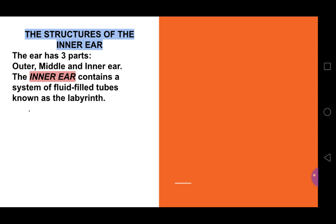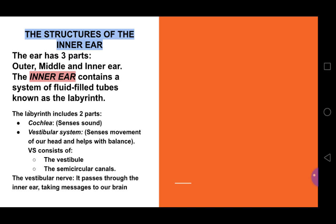The structure of the inner ear: the ear has three parts — outer, middle, and inner. The inner ear contains a system of fluid-filled tubes known as the labyrinth. The labyrinth includes two parts: one is the cochlea, which senses sound and is responsible for hearing, and the vestibular system, which senses movement of our head and helps with balance. It consists of the vestibule and the semicircular canals. There is a vestibular nerve which passes through the inner ear, taking messages to our brain.